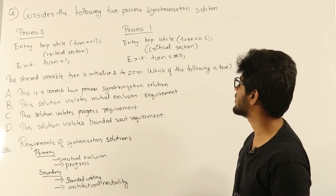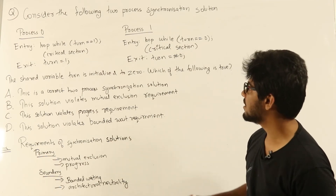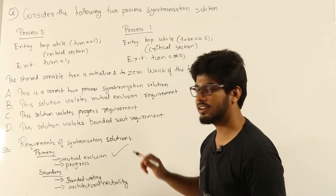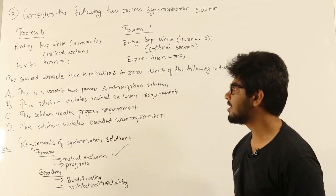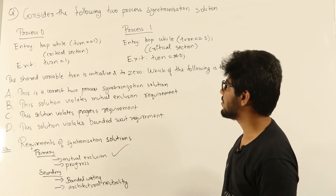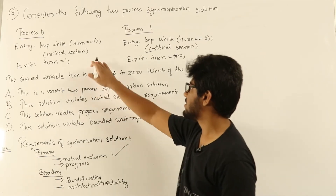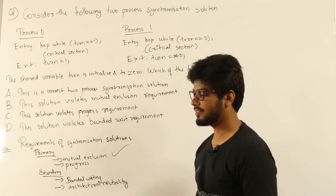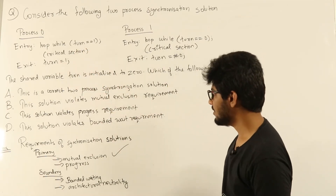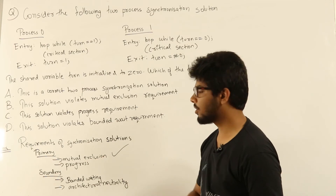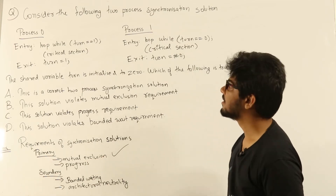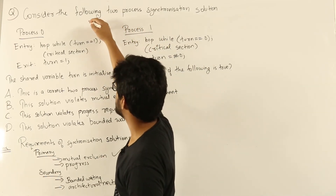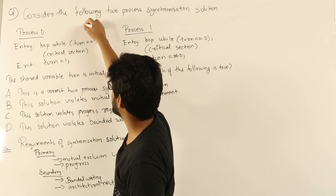So if turn is 0, only one process enters the critical section; if turn is 1, also only one process enters. Mutual exclusion is satisfied in our solution because there is no way both processes can simultaneously enter the critical section. But is progress satisfied? Let's say turn is equal to 0.